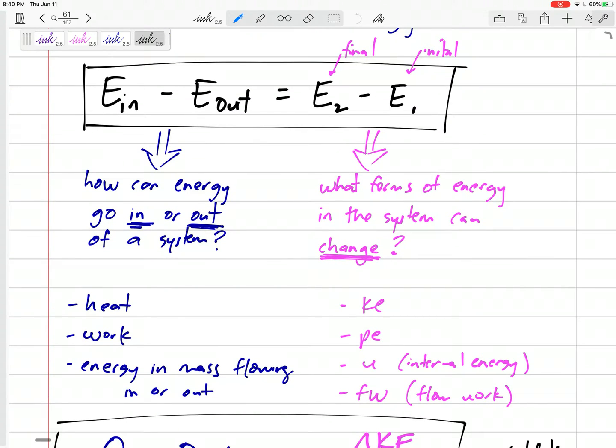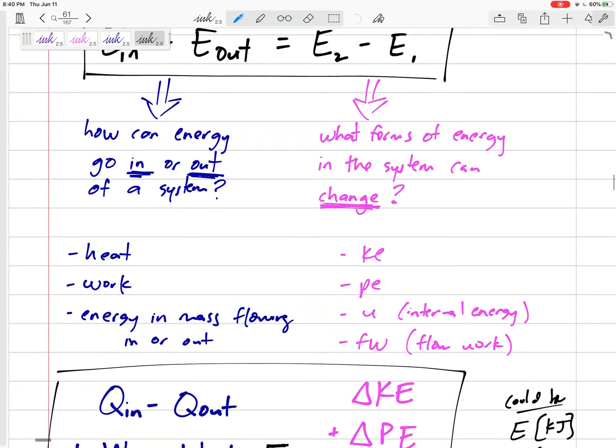On the left hand side, we have heat and work and energy in the mass that's flowing in and out. On the right hand side, we have change in kinetic energy, change in potential energy, change in internal energy, and flow work.